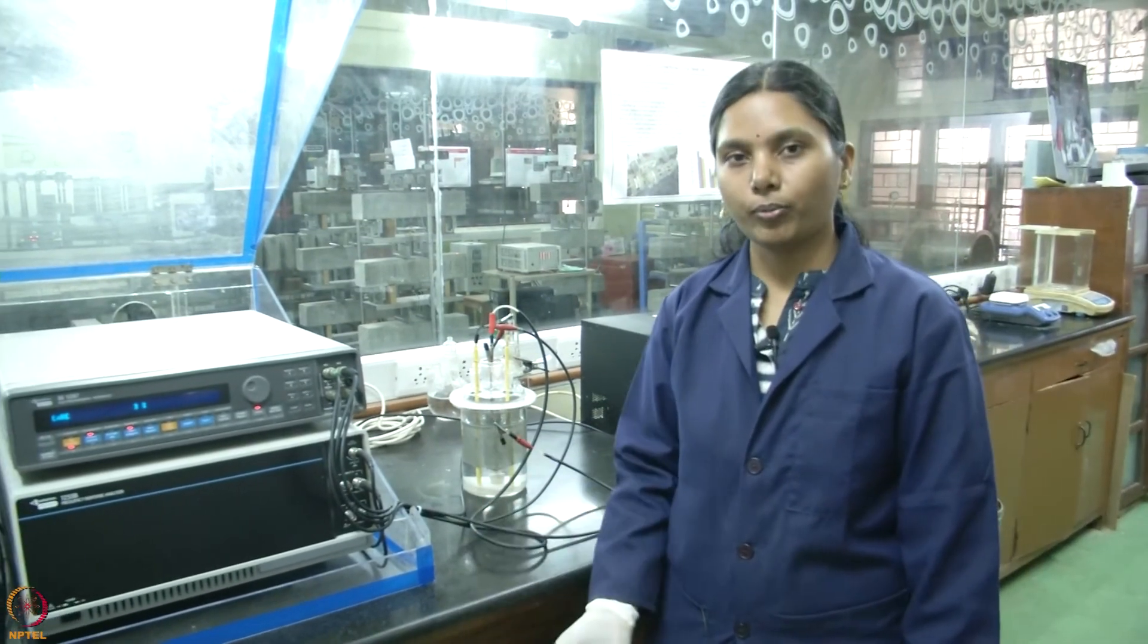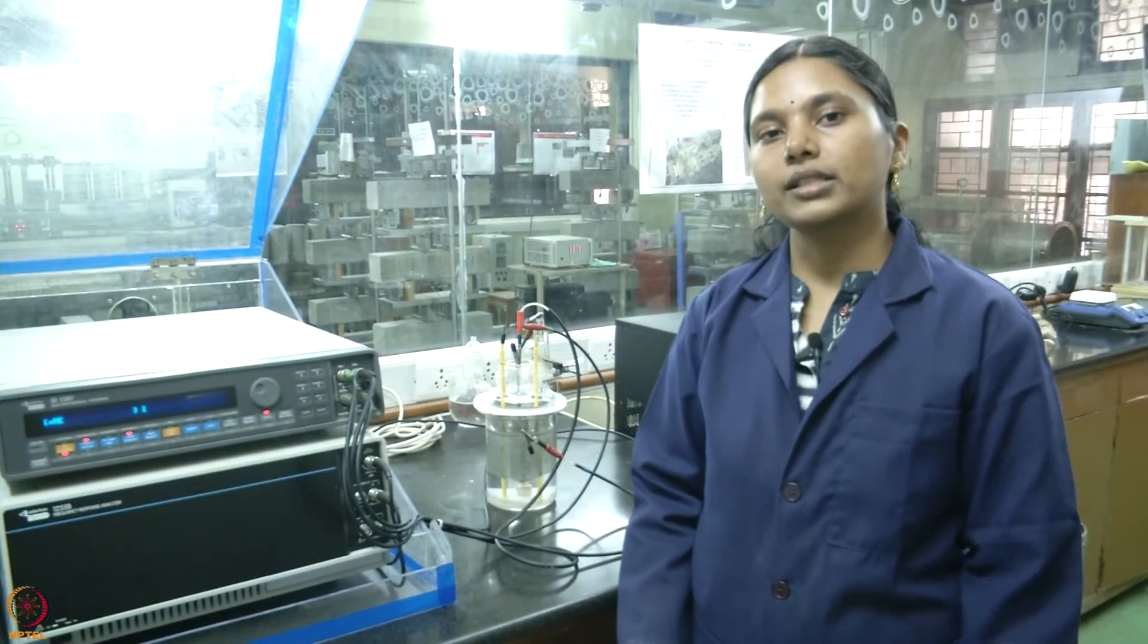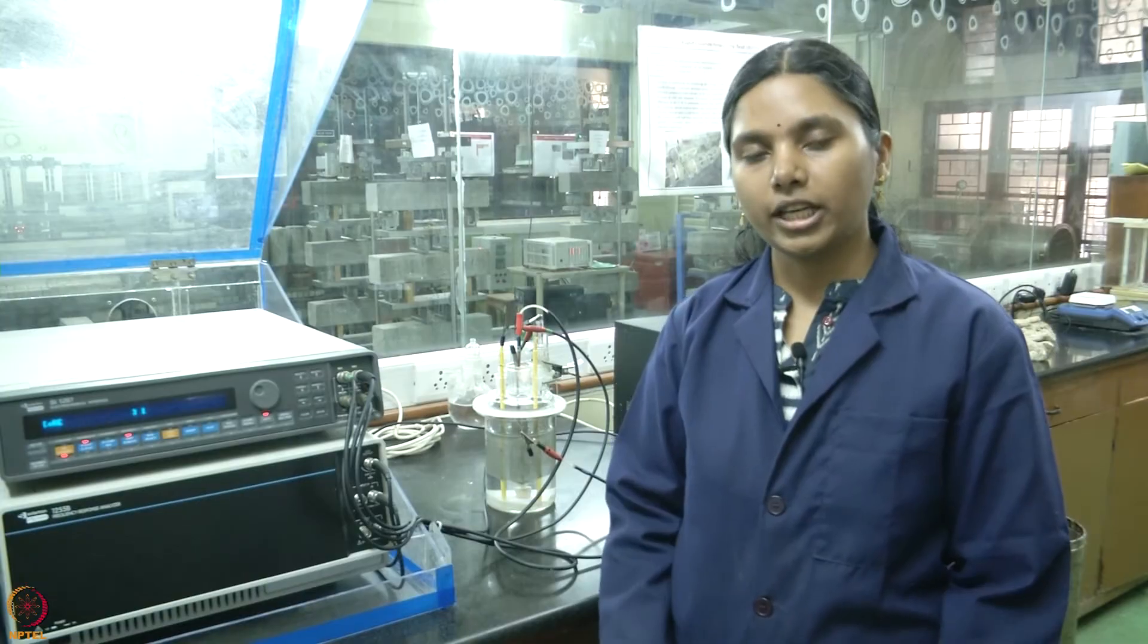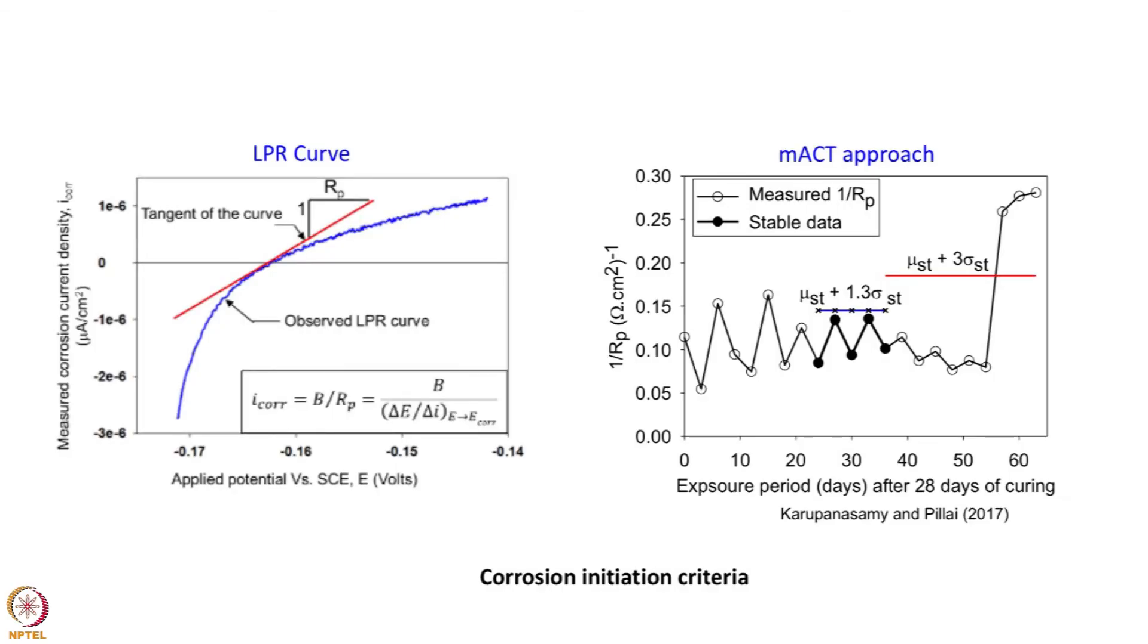Now, we are done with the measurement of polarization resistance with these equipments. We need to do repeated measurement of polarization resistance to get to know the chloride threshold. Chloride threshold is the minimum amount of chlorides that are required to initiate corrosion. You can see in this graph that 1 by Rp is plotted against the exposure days. You can see there are ups and downs in the reading. It is because the corrosion process is a dynamic process and the ongoing corrosion may influence the reading. We have to have a statistical analysis. You can see that the stable data has been marked. We do subjected to some statistical analysis of the mean and then when it crosses some certain value that is mu plus 3 sigma, then we consider the specimen to be initiated.